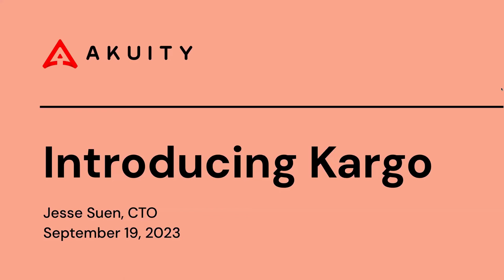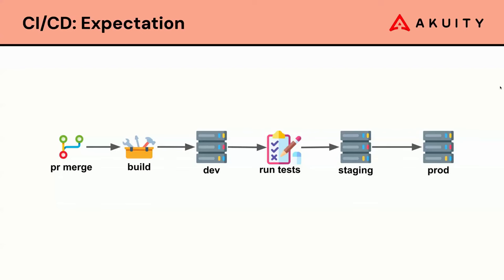Before we get into Kargo, I want to take a step back and explain our motivations. Everyone is striving for this idealized expectation of continuous deployment — the dream that every PR merged into main builds a container image, you test it, and deploy it to a target environment. Using automation, namely your CI system, you repeat this process through multiple environments until production. But in our experience, most organizations aren't doing hands-free, fully autonomous deployments to production, and most will never reach that level of maturity. It requires extensive investment and trust in automated testing.